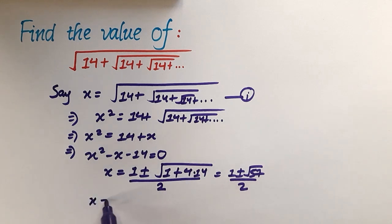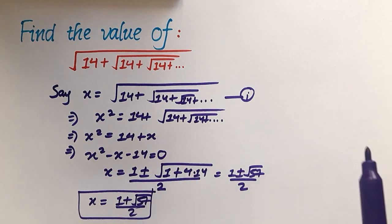We go with x is equal to 1 plus root under 57 over 2, and that is the required answer or the required expression solution.